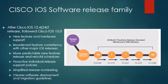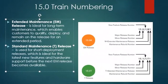After Cisco IOS 12.4, the 2014 release followed Cisco IOS 15.0, which included new feature and hardware support, broader feature consistency, more predictable release schedules, proactive release support policies, simplified release numbering, and clearer software deployment guidelines. Cisco IOS 15.0 uses a different release model from the traditional separate mainline and T-Trains of 12.4. Instead of diverging into separate trains, Cisco IOS 15 has extended maintenance releases (M trains) and standard maintenance releases (T releases), with the numbering convention identifying the specific IOS release including bug fixes and new features.